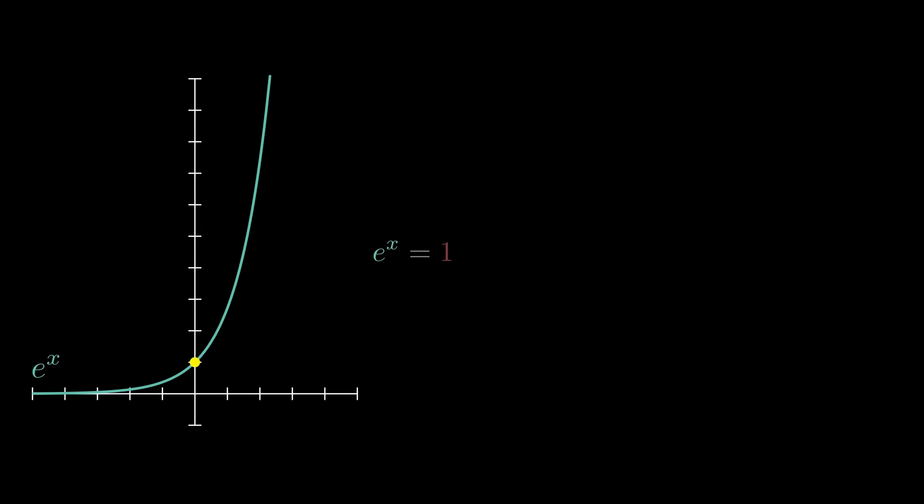So your first term will just be f of zero, which is just one. Your second term will also have an f of zero term, which is just x. Second and third and fourth and fifth term, hopefully you notice a pattern, x squared over two, x cubed or three factorial, on and on and on. And you see on the left, a visual representation of the approximation.